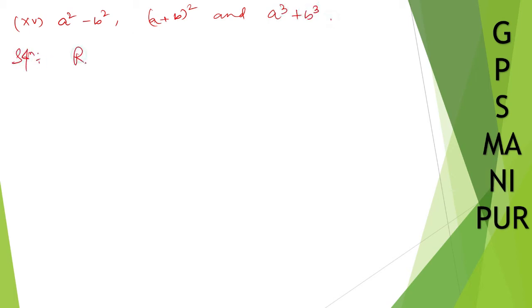Solution: Resolving the given polynomials into factors, we have a square minus b square is equal to a plus b, a minus b.